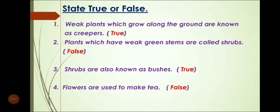It is True. Number 2: Weak plants which have weak green stems are called Shrubs — it will be False. Then we will write False. Number 3: Shrubs are also known as Bushes — it is True.